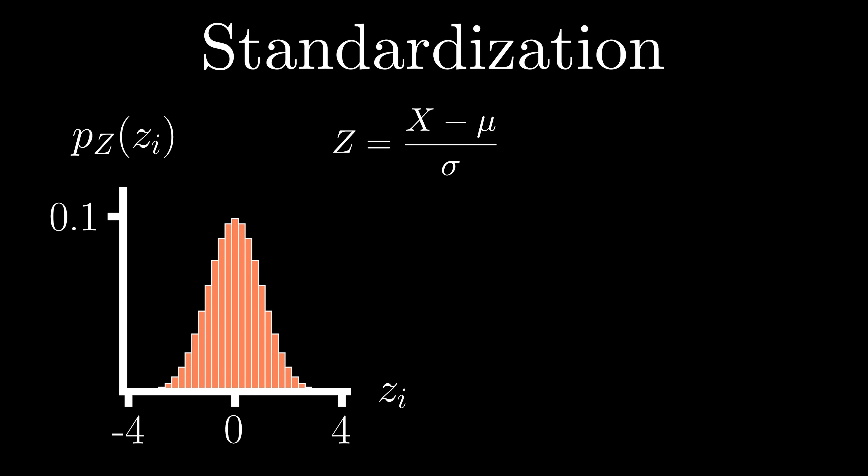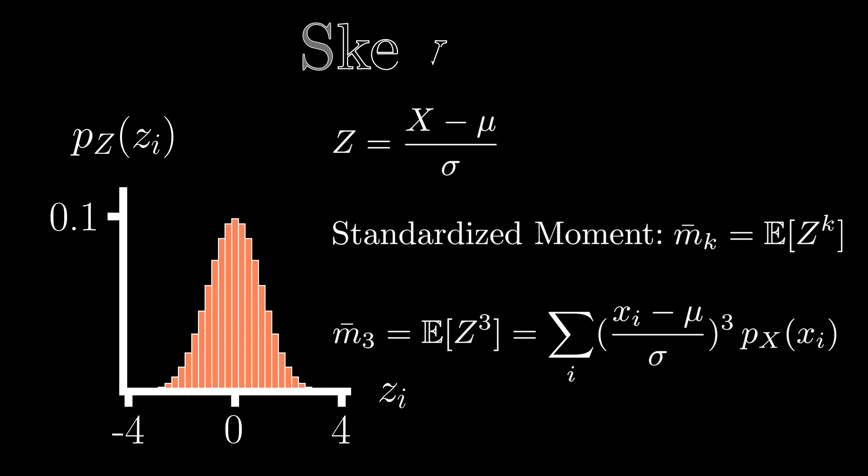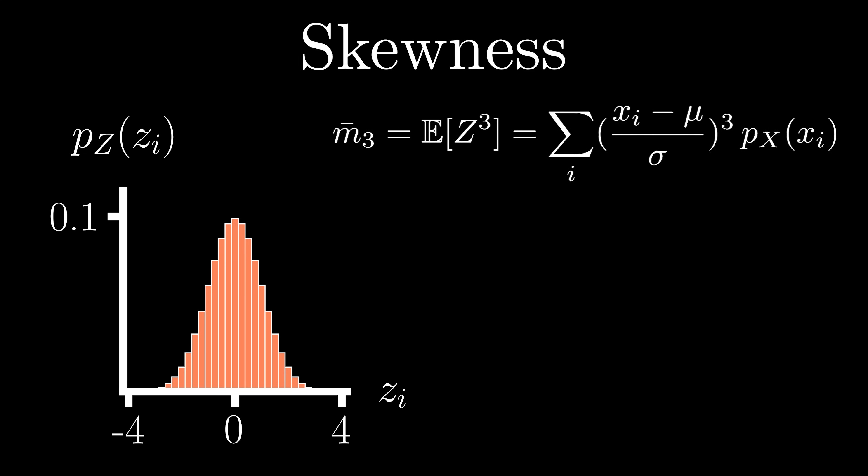Standardized moments are therefore moments just like we've seen earlier, but now for our standardized random variables, Z. Now the first important standardized moment is our third one, which is commonly referred to as skewness. Skewness aims to quantify the relative size of the tails for our distribution, and that is due to our exponent. Specifically, if we are raising each of our standardized values to the third power, those values of Z much larger than one should contribute quite a bit towards our skewness calculation.